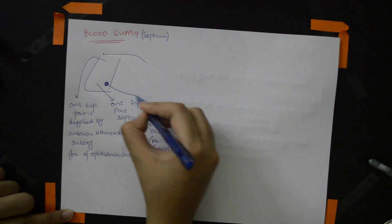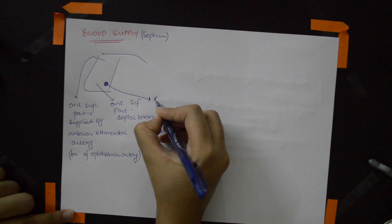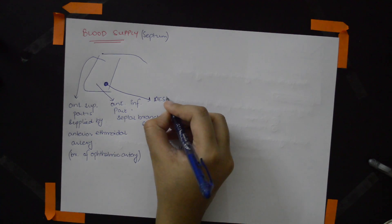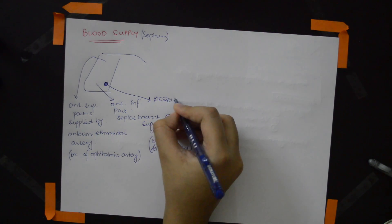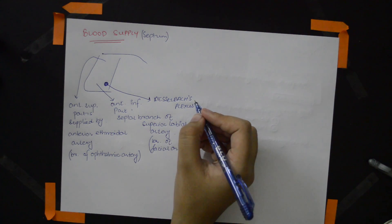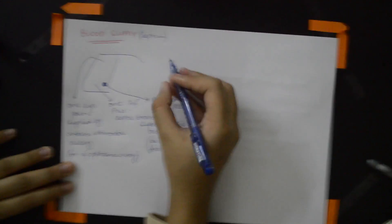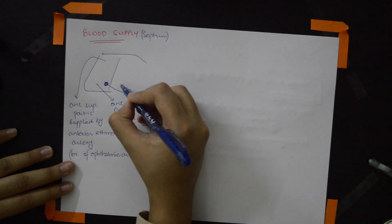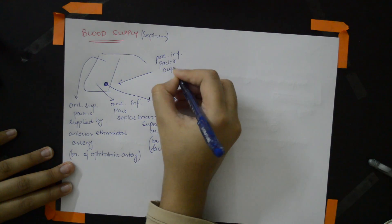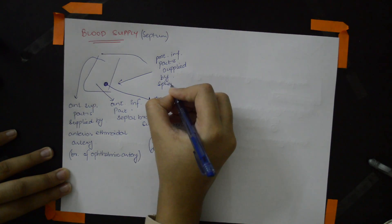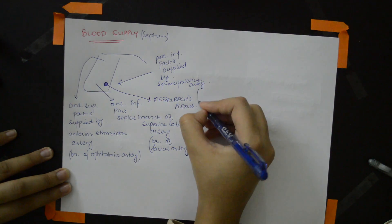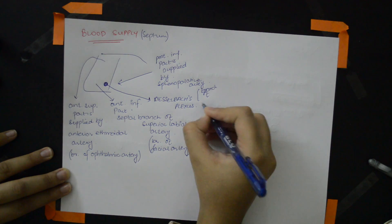This area forms a plexus called Kieselbach's plexus, or the Little's area, also called the Little's plexus. The posterior inferior part is supplied by the sphenopalatine artery, which is a branch of the maxillary artery.